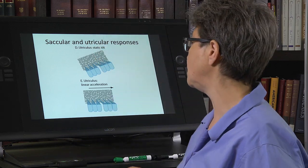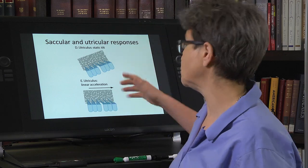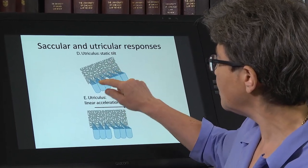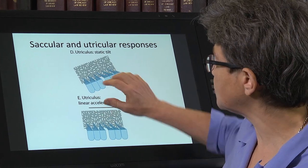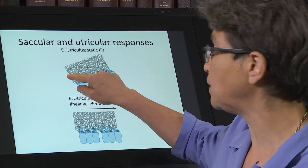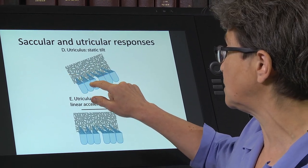And the way that happens is it affects the utriculus. It also affects the sacculus, but as we look at here, if the utriculus is tilted because you're no longer on horizontal, that displaces the otoconial mass. And there's a response to this.